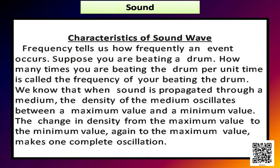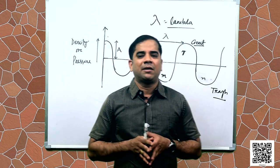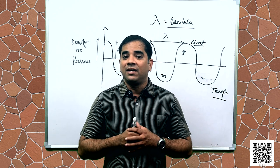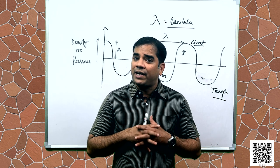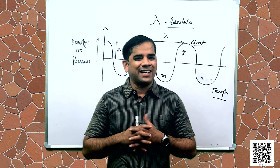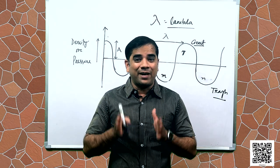Frequency tells us how frequently an event occurs. Suppose you are beating a drum — how many times you beat the drum per unit time is called the frequency. For example, if I beat the drum 20 times per unit time, my frequency is 20. It is the number of times an event occurs per unit time.